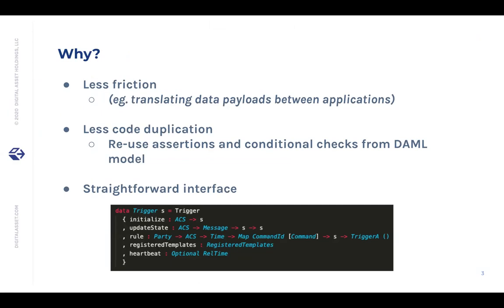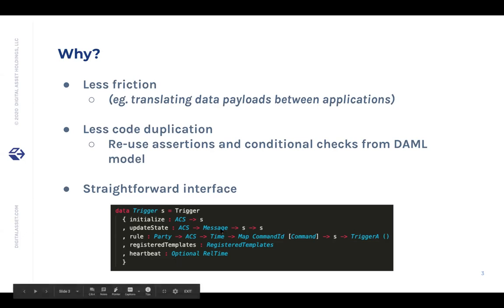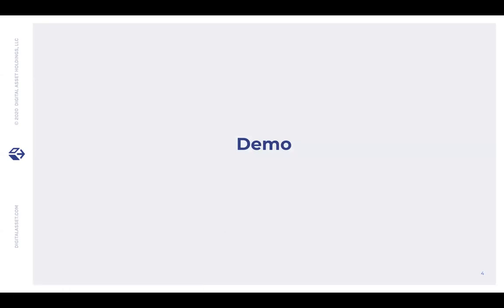So why — what's the motivation behind them? We feel there's a lot less friction when things are in DAML — both the models and the automation. You don't have to translate data payloads to JSON back and forth, and there's less code duplication in terms of checking things. You can leverage the assertions that DAML provides straight out of the model. There's also a straightforward interface with a few functions letting you keep user-defined state, define rules, hook triggers to specific template events, and fire things on a timer via the heartbeat.